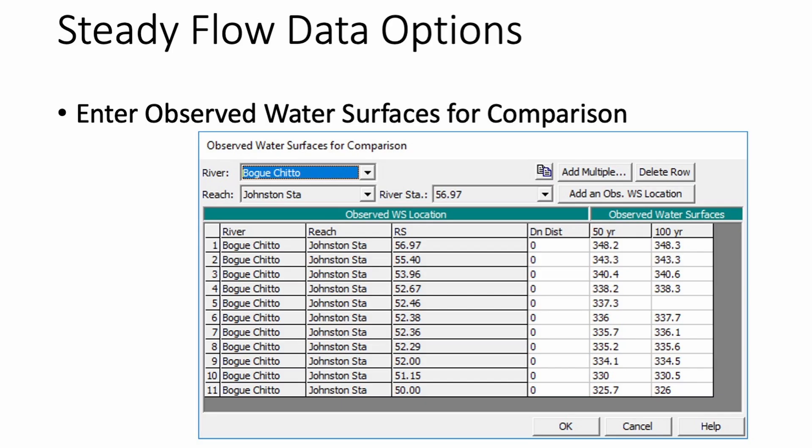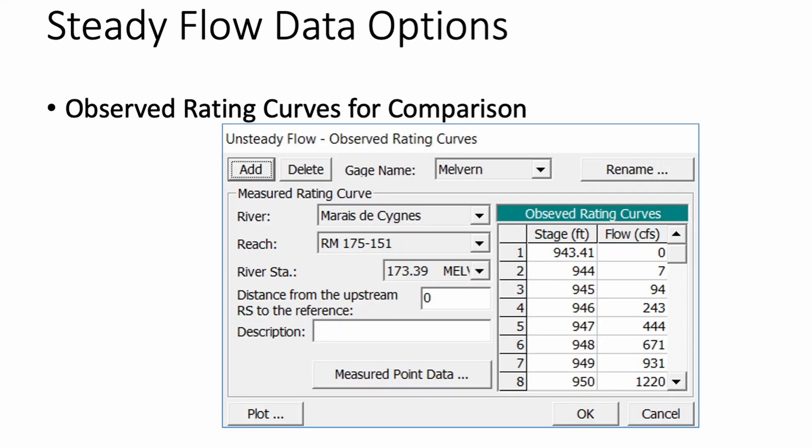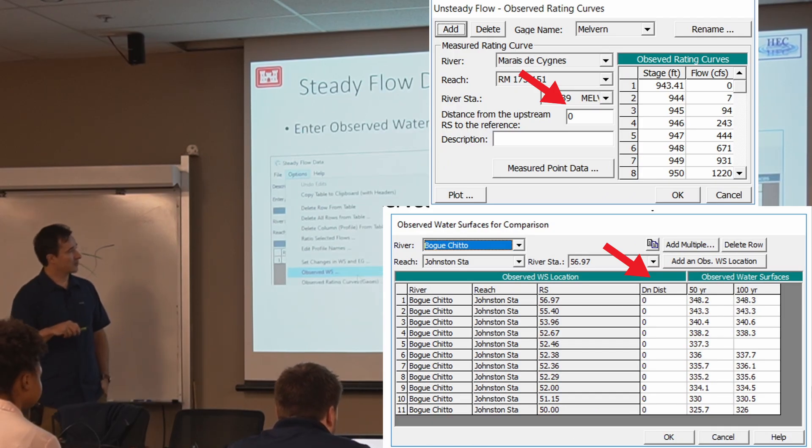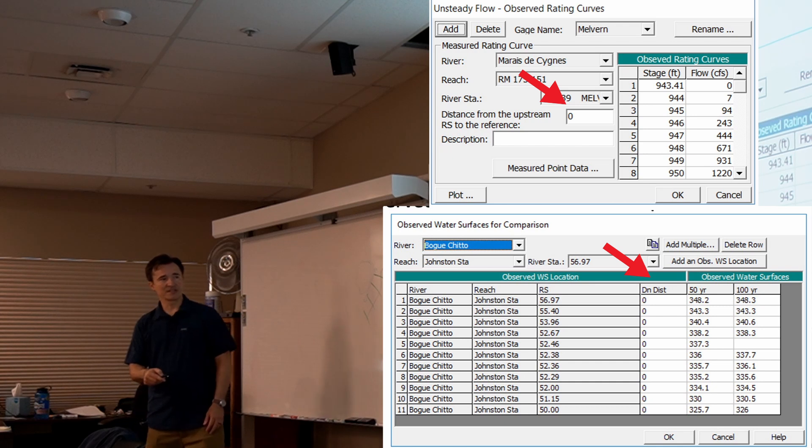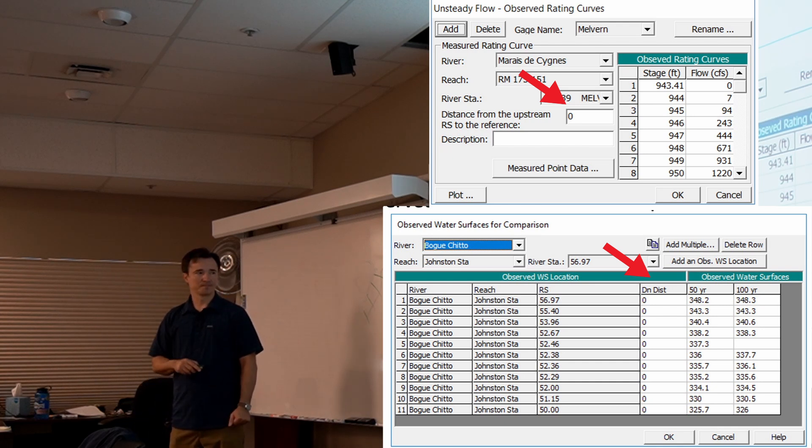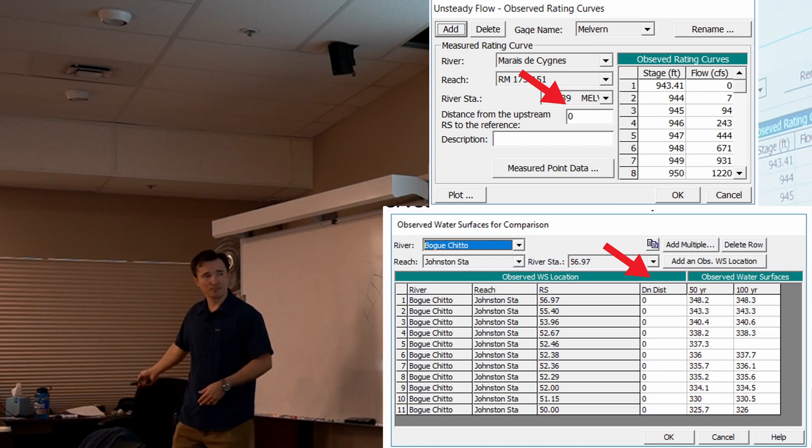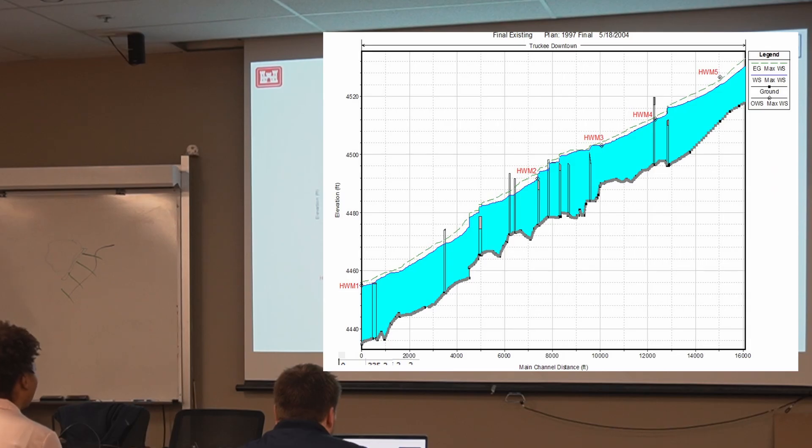So observed data. You can specify observed data for any of your profiles at any cross-section. And you can also specify rating curves at any gauge. And notice that both in this one and in the previous one, the observed data doesn't have to be at your cross-section. It can be in between cross-sections. So that's the downstream distance. And then here you have the similar thing, distance from the upstream to that point. And when they get plotted, we'll show plots later. They'll plot at the right location.